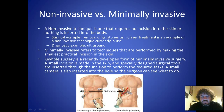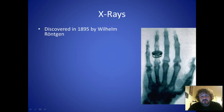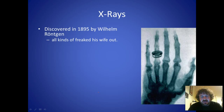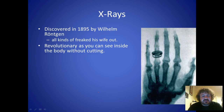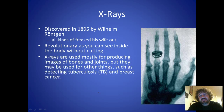X-rays are part of the electromagnetic spectrum but are not visible light. Roentgen discovered them in 1895 — he really freaked his wife out; she had no idea what was happening and thought it was sorcery. This discovery meant we were able to see things going on inside the body without cutting into it, which has had a massive impact on reducing complications.